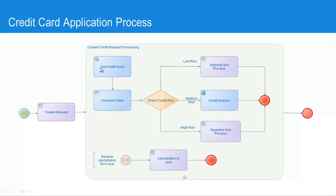The first thing that happens is an external web service call to get a credit score for that person. Once we have a numeric credit score we pass that through a decision table where a number of rules decide whether that credit is low risk, medium risk or high risk.